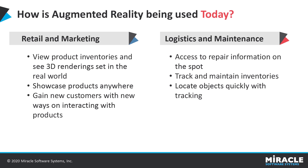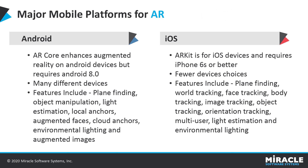AR is also being used in logistics and maintenance for things such as access to repair information, tracking and maintaining your inventories, or even locating objects quickly with HMDs — head-mounted displays — that can track you directly to the product you're looking for.